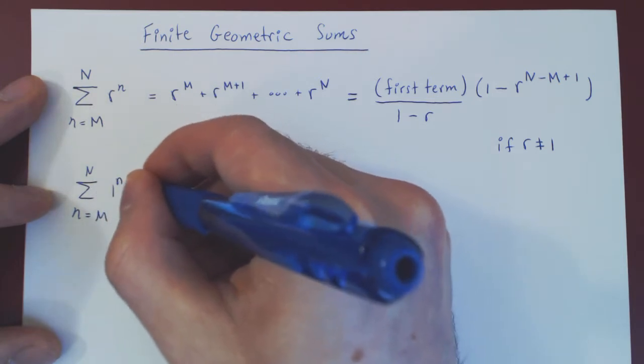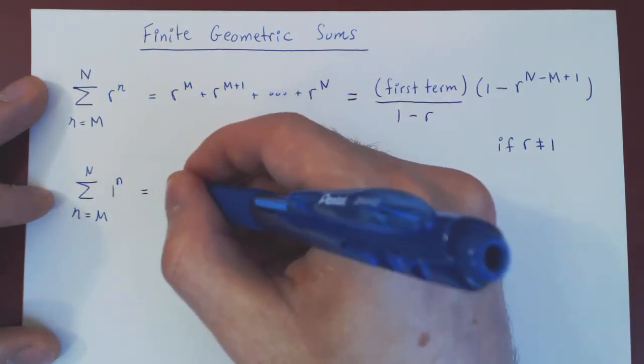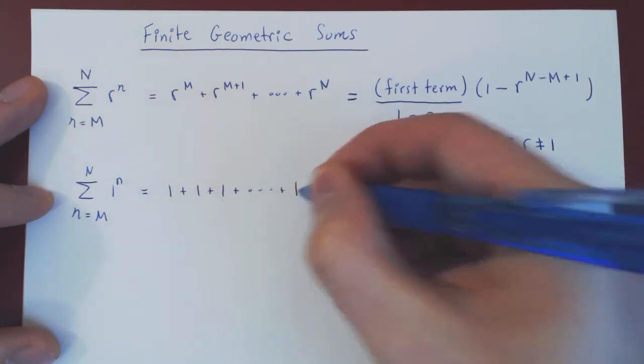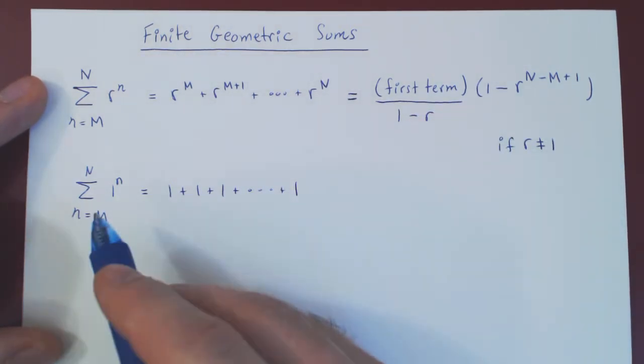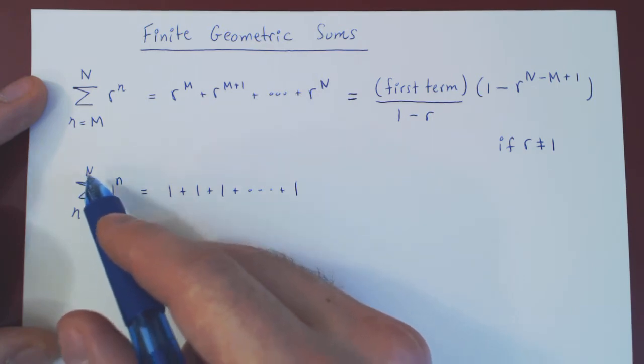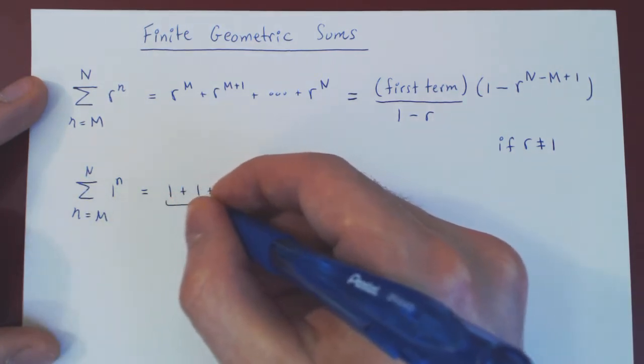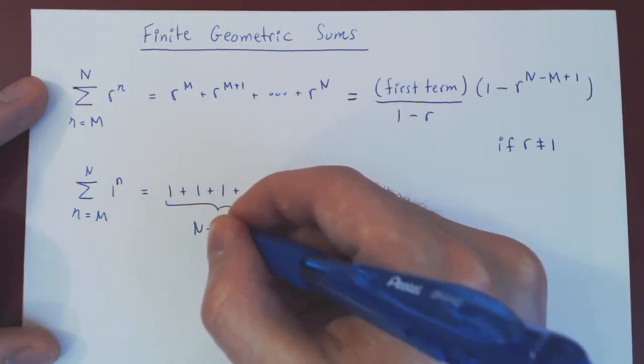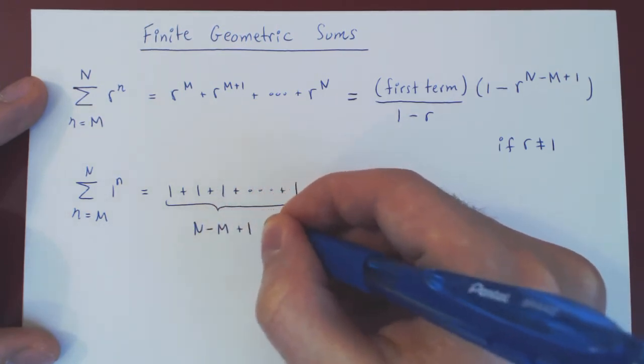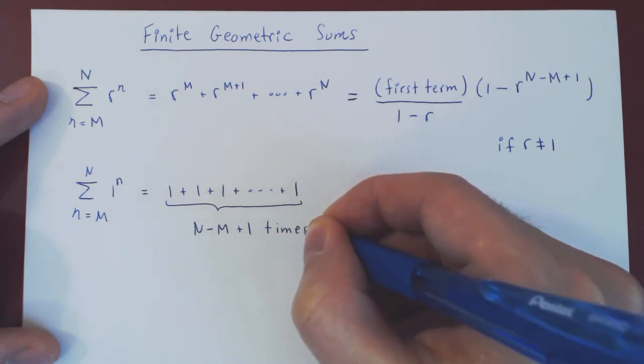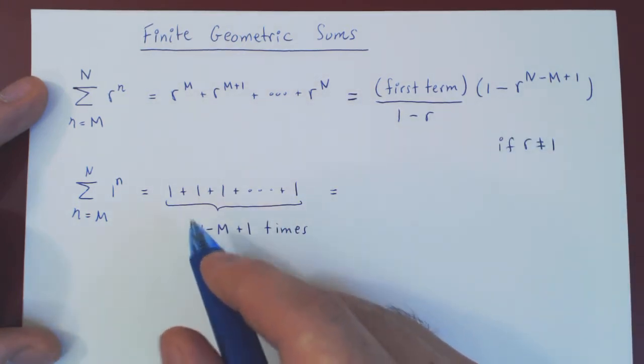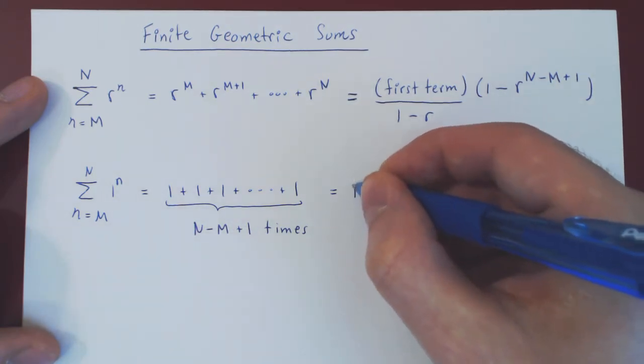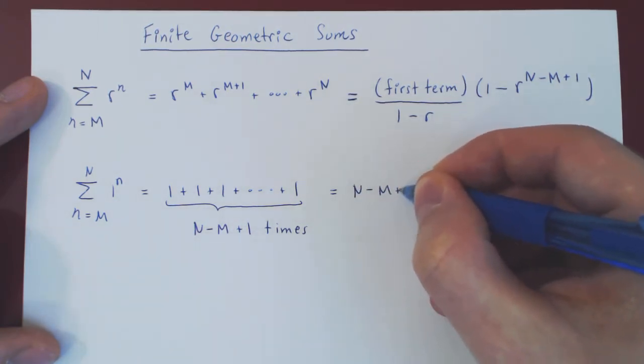As 1 to the n is always 1, so we're just adding 1 plus 1 plus 1 dot dot dot plus 1 how many times. And you have to be careful here, it's not n minus m times, but it's actually n minus m plus 1 times. So if you're adding 1 with itself n minus m plus 1 times, the result of course is n minus m plus 1.